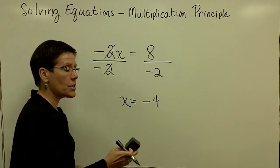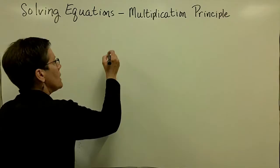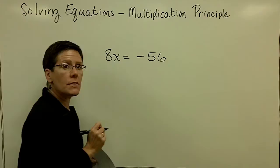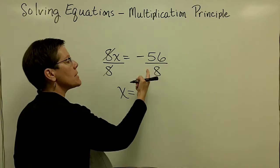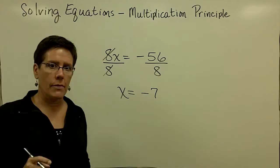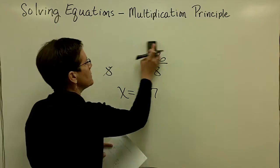I should check my answer, but I'm not going to take the time to do that because I want to do some work with fractions in this clip. Let's take a look at 8x equals negative 56. If I want to get the variable x alone, I'm going to divide both sides by 8, so that will become a 1x. Then negative 56 divided by positive 8 will be a negative number, and that is negative 7. Check it — we'll be doing some checks as I do a couple more.